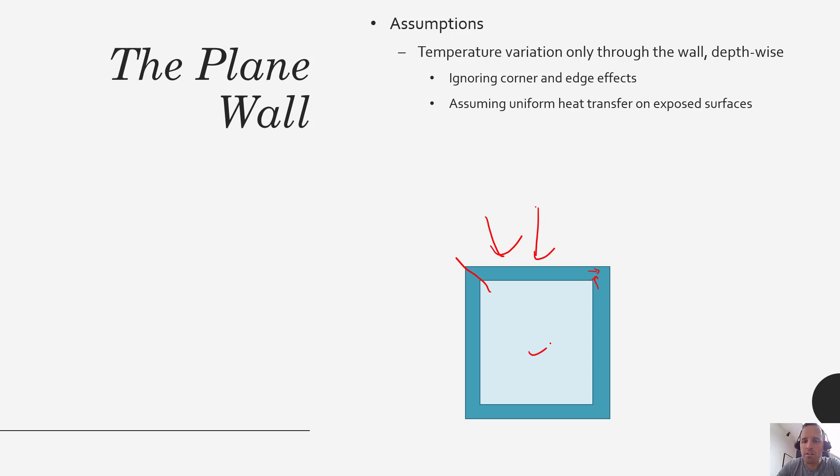We'd also be assuming that there's a pretty good circulation here on this air on the inside and the air on the outside. So within the air that kind of uniformly distributes heat transfer convection-wise, you could be exposed to the same temperature air at any point along that wall, which allows you to neglect temperature variations in that direction.